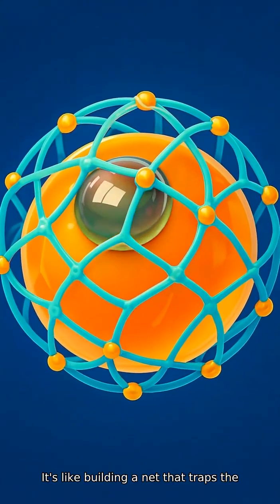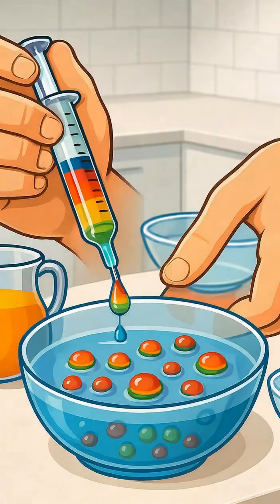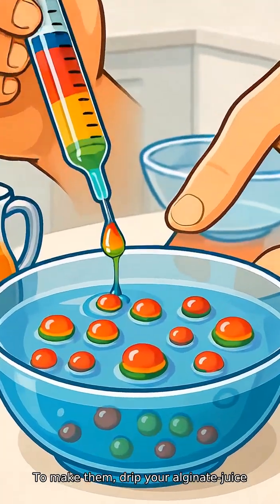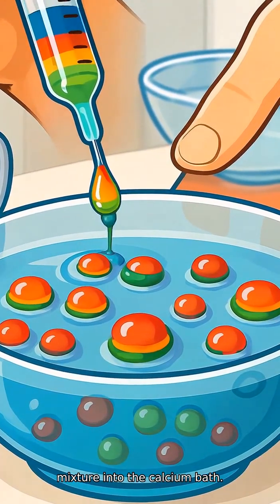It's like building a net that traps the juice as a juicy pearl. To make them, drip your alginate juice mixture into the calcium bath.